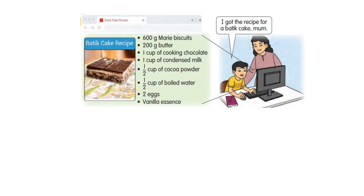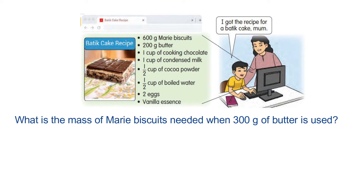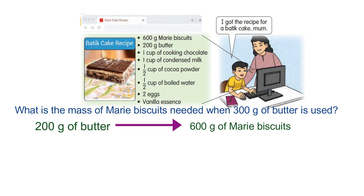What is the mass of Marie biscuits needed when 300 grams of butter is used? For 200 grams of butter, we need 600 grams of Marie biscuits. So we find for 100 grams of butter first. 200 grams of butter — how can you get 100 grams? You divide by 2.